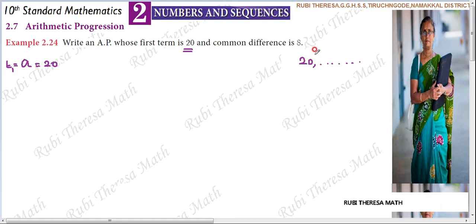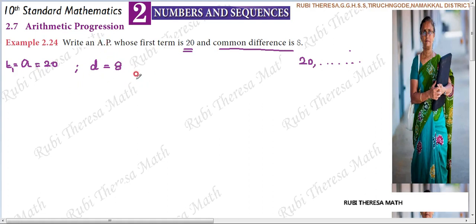First term increases by 8 to get the second term. Again if you add 8 to the third term, you get the fourth term. So 8 is your common difference, D equals 8. If you start with the first term, you add the common difference to get the next terms. T2 equals T1 add the common difference.